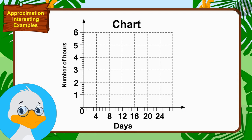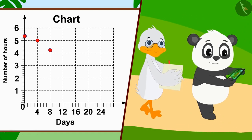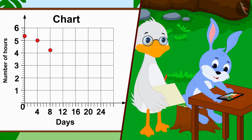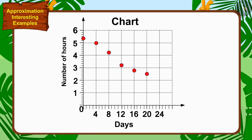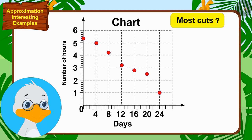Currently, children spend an average of 5 hours and 20 minutes on the phone every day. This is shown by uncle making a point on the vertical line. Uncle started recording the average time spent on the phone every 4th day on the chart. Uncle recorded the time spent on the phone by the children for 24 days. Now let me look at this chart to find out between which days the time spent on the phone by children has been cut the most.